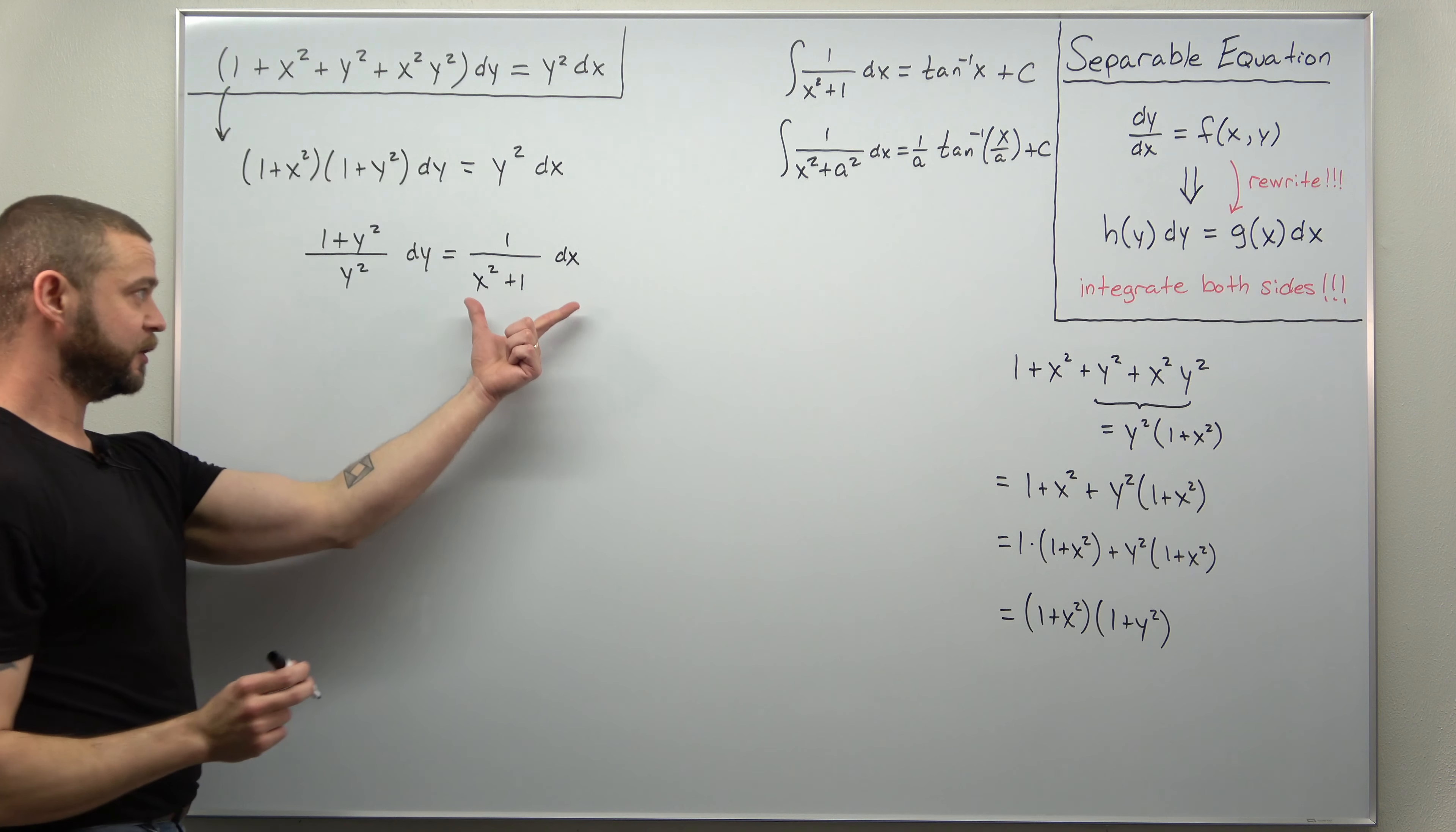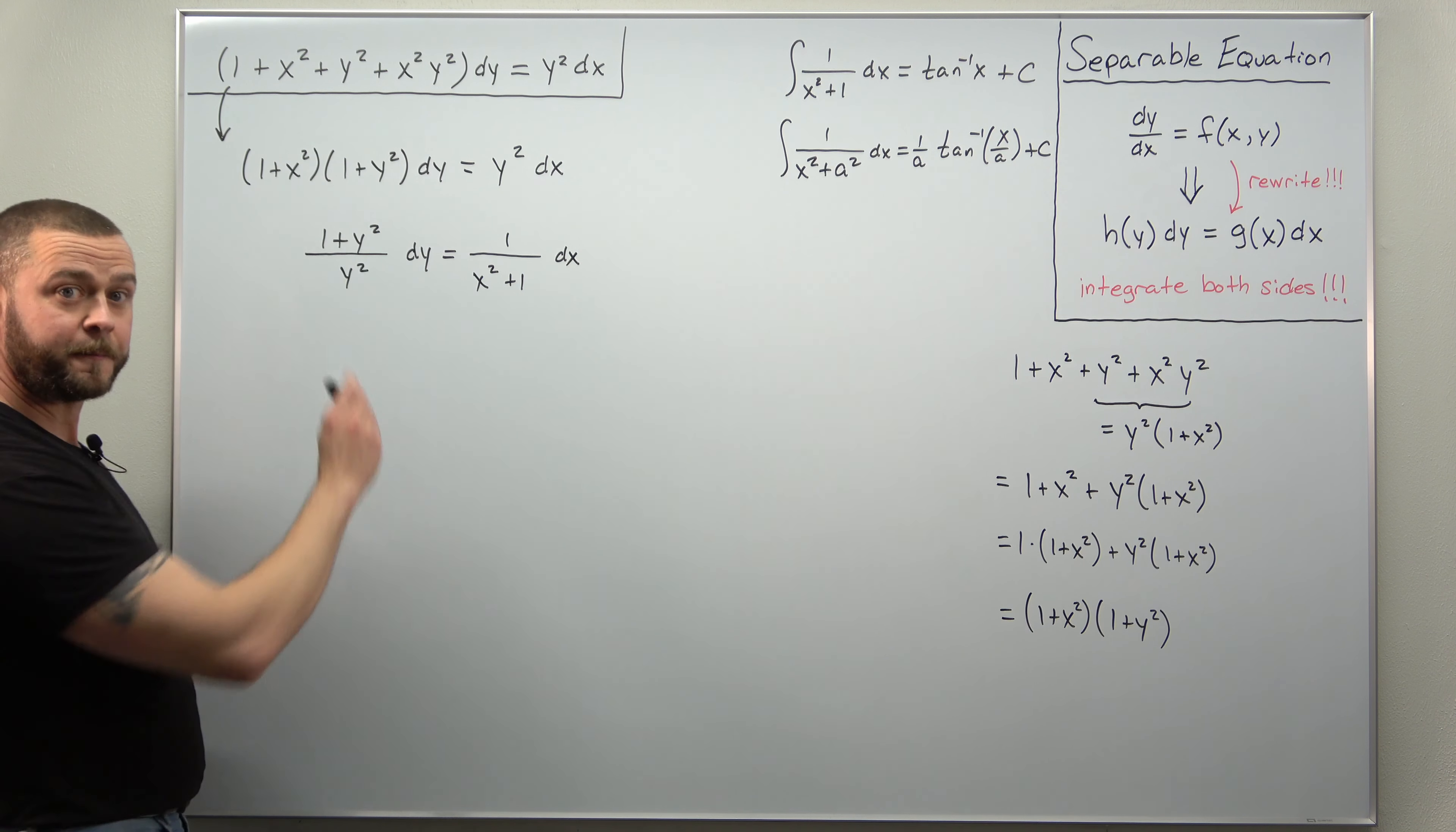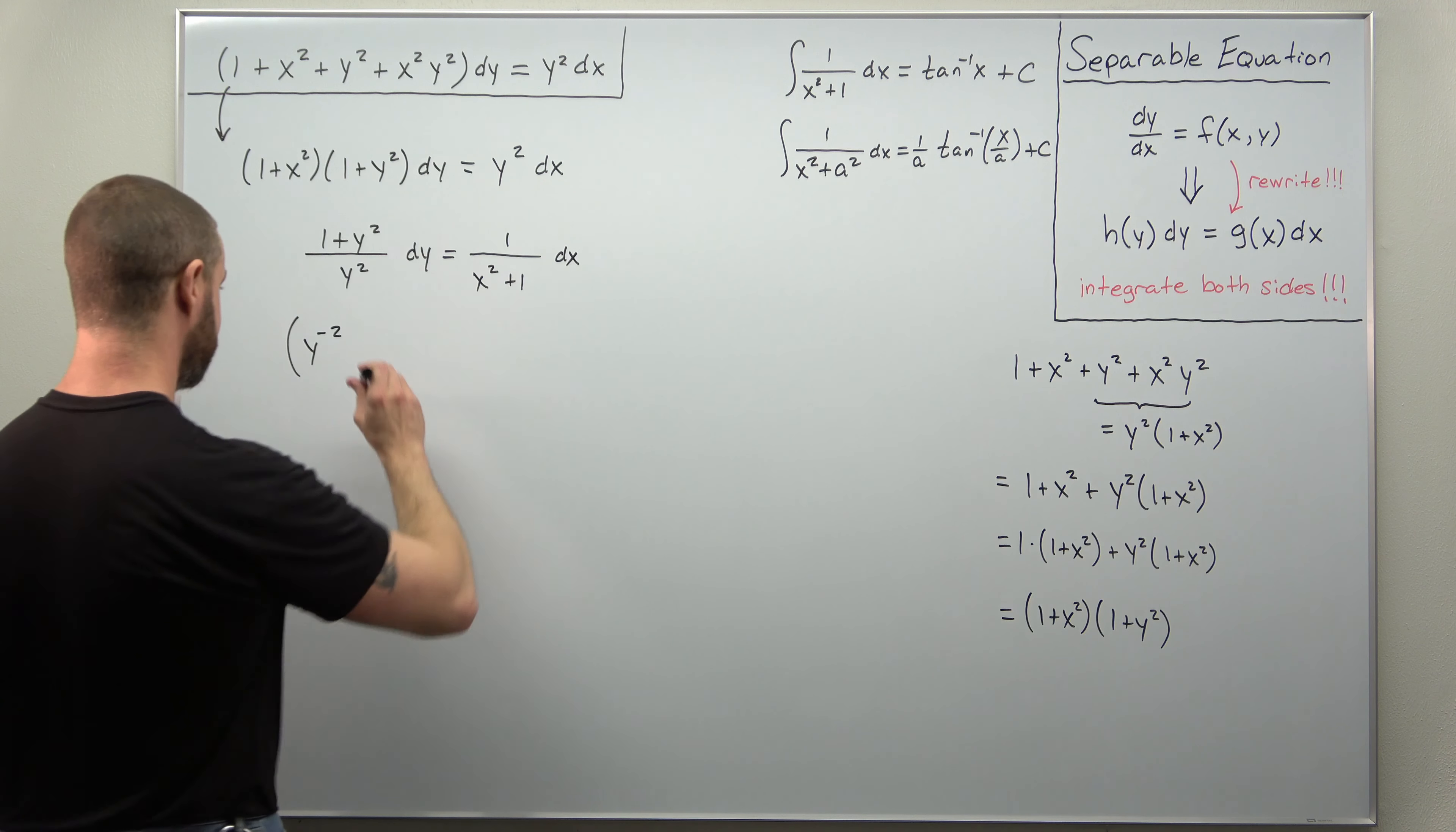And let's notice for integrating the left side with respect to y, if I divide I can go ahead and get 1 over y squared, which I can write as y to the negative 2, and then y squared divided by y squared cancels out. So let's go ahead and divide. We'll write that as 1 divided by y squared as y to the negative 2, and then y squared divided by y squared cancels to 1.